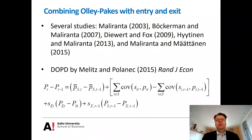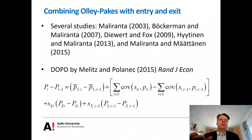We do not observe groups E and X in the same time period, which is why we compare them to the group of surviving firms that we observe in both periods. This is an appealing feature of the Melitz and Polanec decomposition — the entry and exit components have a very natural interpretation as the relative productivity of entering or exiting firms relative to survivors in the same period.